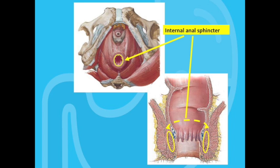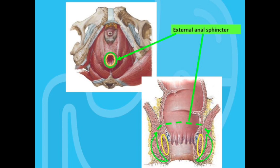By contrast, the external anal sphincter is a voluntary muscle which can be squeezed at will. This is the one that allows you to get to the bathroom in time when you do feel the need to go. All of these pieces work together to keep stool in the rectum and allow you to pass a bowel movement only when you want to and when it is socially acceptable. So that's how things are supposed to work normally.